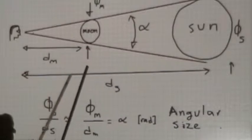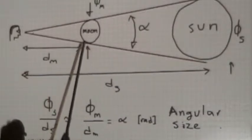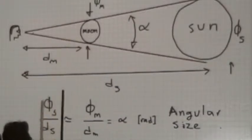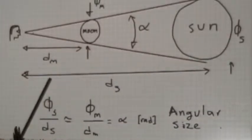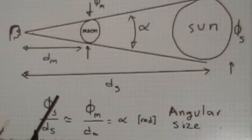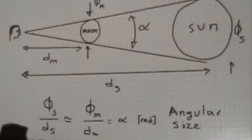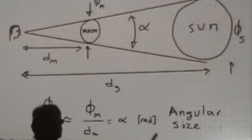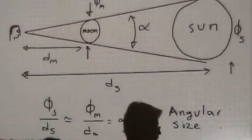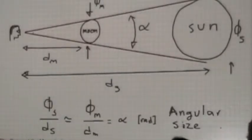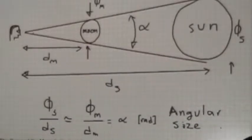The point is that this quantity — the quantity that tells you how far an object looks to you — is what we call the angular size of an object. For the moon and the sun, the angular size seems to coincide. And you can measure the angular size of any object.